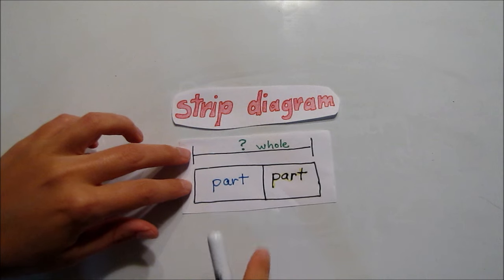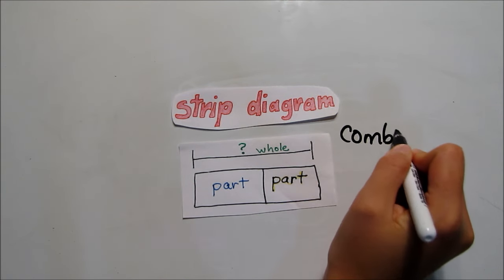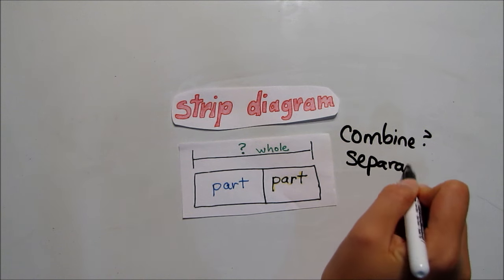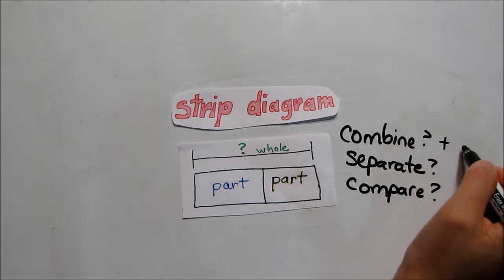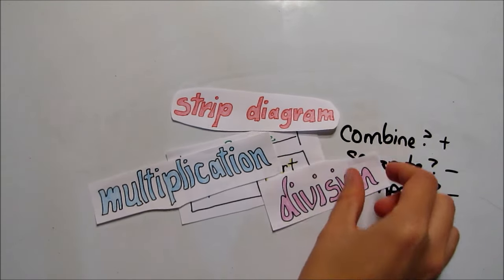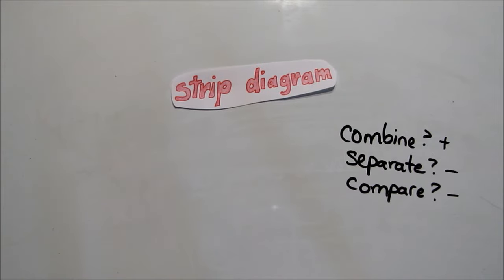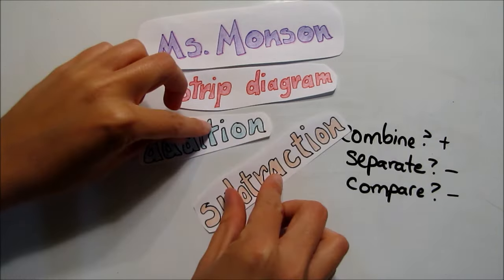Strip diagrams are flexible, and are simply a way to show your thinking as you solve a problem. When a student can use a strip diagram to model a problem, the strip diagram can also help them decide which operation to use. To finish learning about all the ways strip diagrams are used, make sure you watch the video about strip diagrams for multiplying and dividing. This is Ms. Monson, and this video is all about using strip diagrams when you're adding and subtracting.